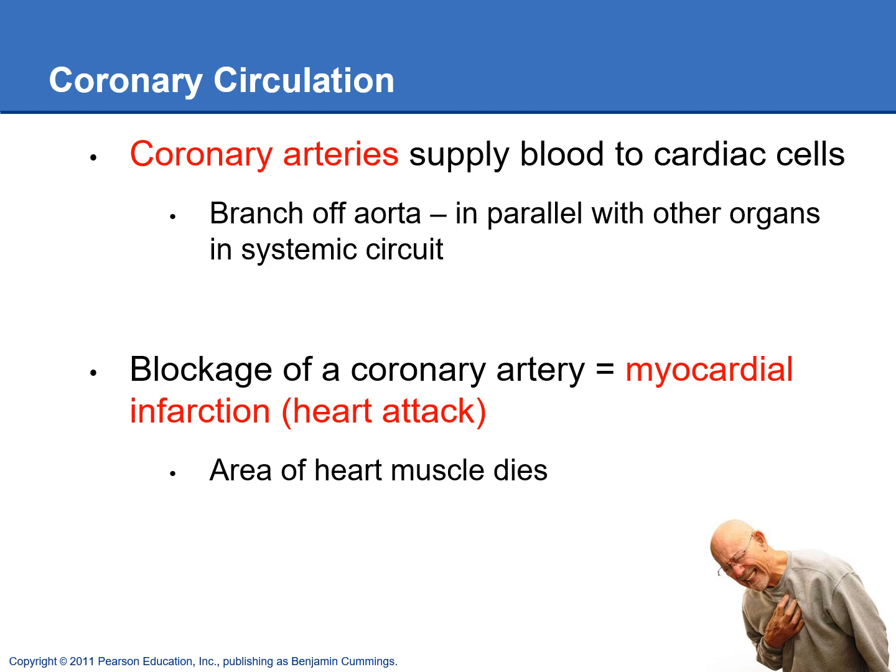We also have coronary arteries and veins, which supply blood flow to the cardiac muscle cells. The cardiac muscle cells can't access blood from inside the chambers because there's a layer of epithelial tissue in between, so they need their own blood supply. It's critical to supply the cardiac muscle because it works very hard, relying heavily on mitochondria to make ATP and requiring a lot of oxygen. A blockage of a coronary artery will cause a myocardial infarction — abbreviated MI — better known as a heart attack.